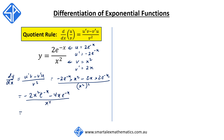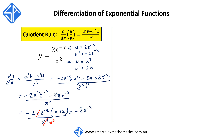We factorize the numerator to get -2xe^(-x)(x + 2) all over x⁴. The x terms cancel, leaving x³ in the denominator only. So this simplifies to -2e^(-x)(x + 2) / x³.